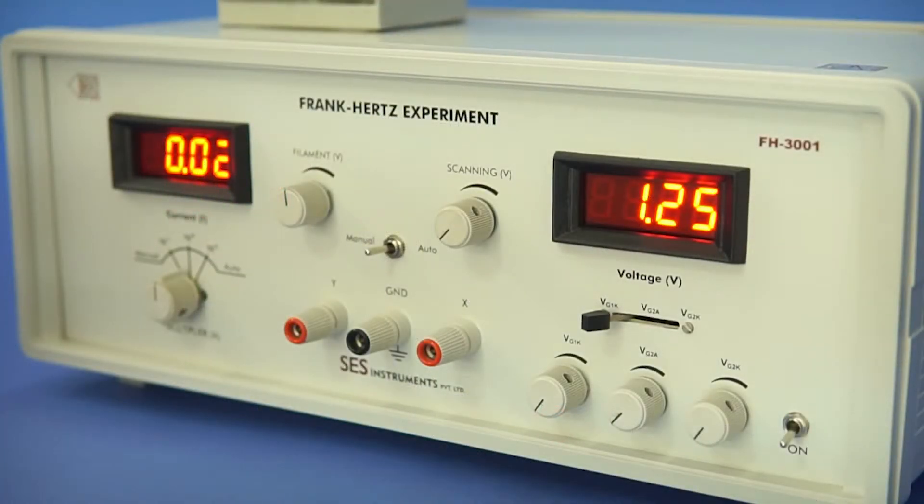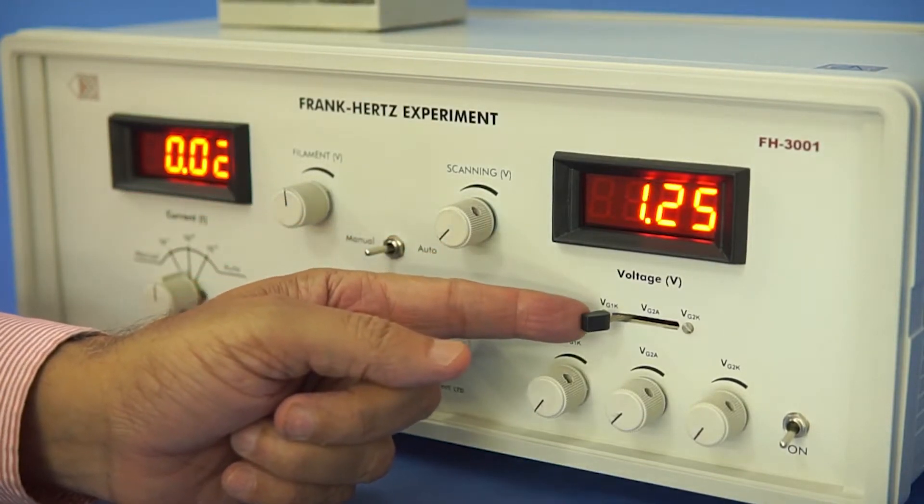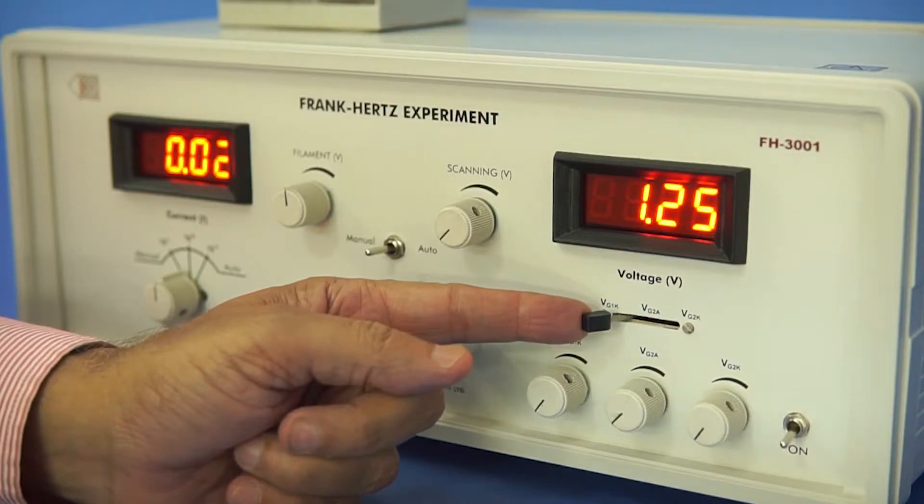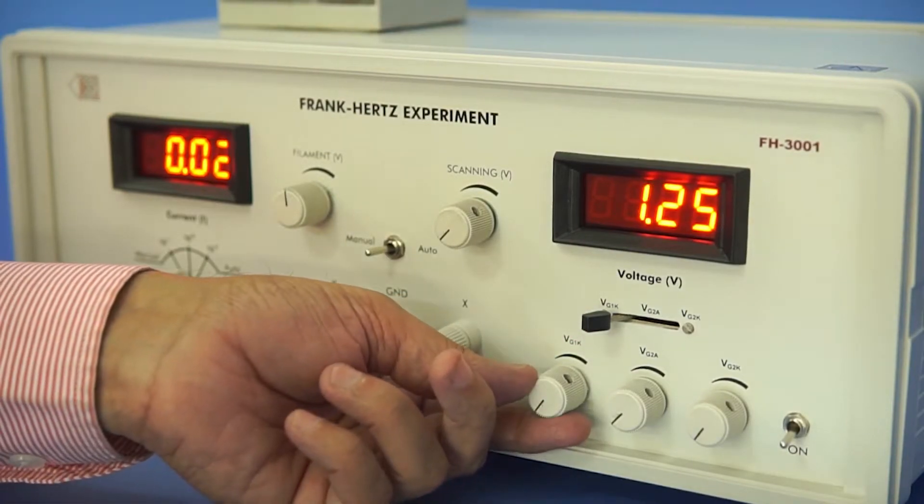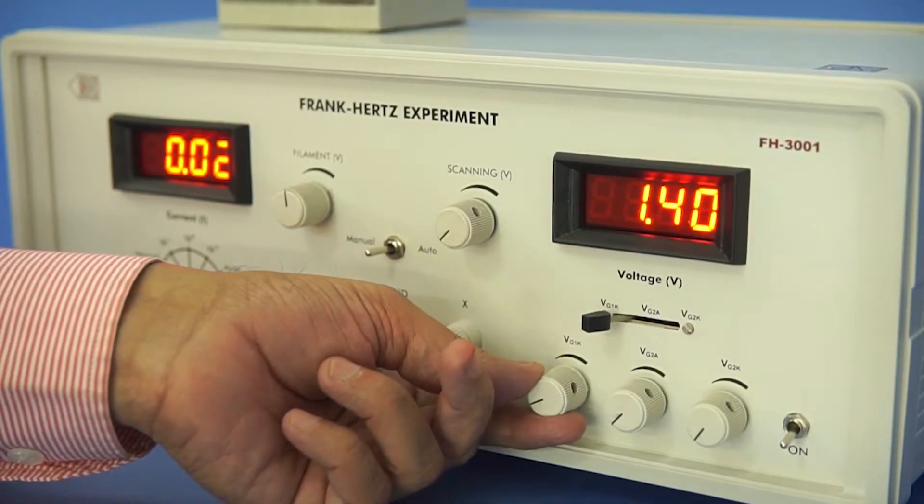Now we set the biasing voltages. First we set the band switch position at VG1K. Now we set the biasing voltage at 1.5 volt.